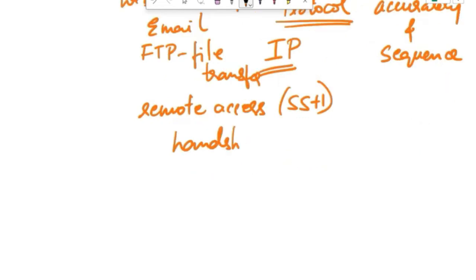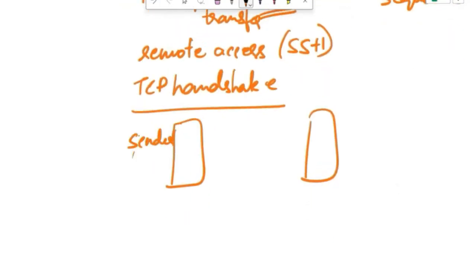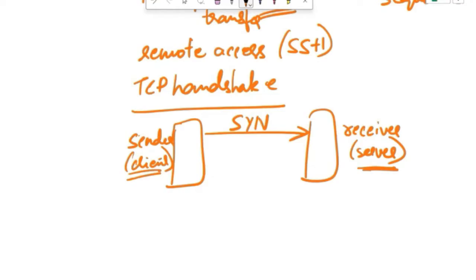Now let's talk about the handshake process of the transmission control protocol. This is like a friendly conversation between two devices before they start sending any data. Let's say that this is the sender, that is the client, and this one is the receiver, the server. The client wants to start a conversation with the server, so it sends a hello message called a SYN packet to the server. SYN is synchronized packet.